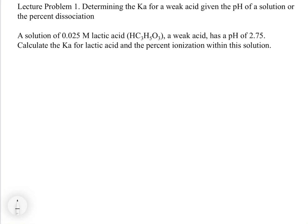It turns out that in chapter 16, pretty much all of the basic beginning reactions are just examples from chapter 14. So what we're going to look at here is determining the Ka — given the pH of a solution or the percent dissociation. The pH of a solution is the concentration of H3O+ at equilibrium, so this is a classic type one problem — the type one analogy for weak acids.